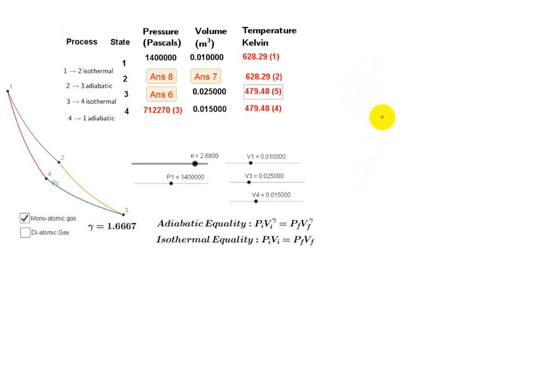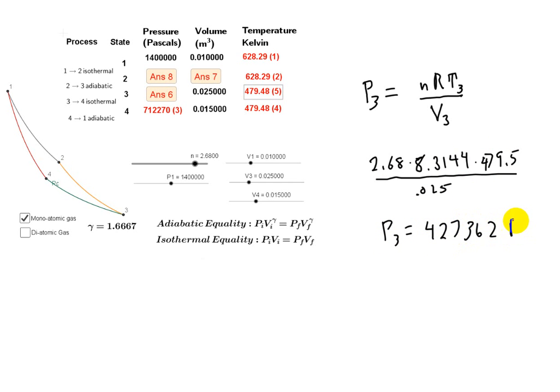For six, we're looking for the pressure at state three. It's just going to be another gas law problem. We can say pressure at state three is going to be nR times the temperature of state three over the volume at state three. We have all of these, so it's simply going to be 2.68 times 8.3144 times 479.5 divided by 0.025 cubic meters. So that means P3 is going to be equal to 427362 Pascals.